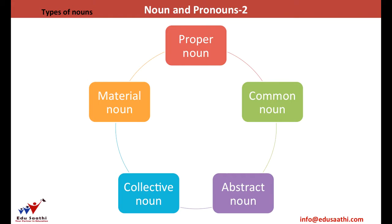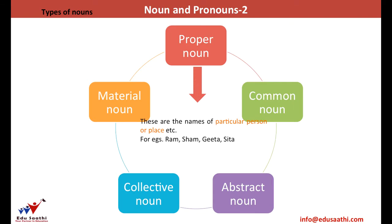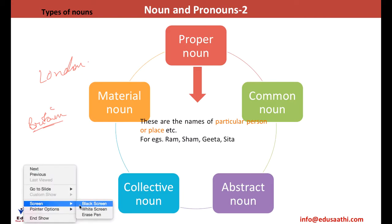There are five types of nouns: proper noun, common noun, abstract noun, collective noun, and material noun. We start with proper nouns. The name of a very particular thing or place is known as a proper noun. For example, Ram, Shyam, Sita, Gita — these are proper nouns. Likewise, London is a proper noun, or Great Britain — these are the names of very particular things.